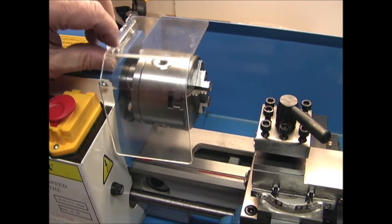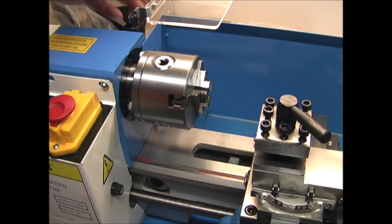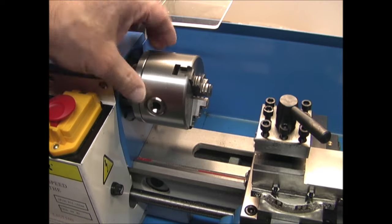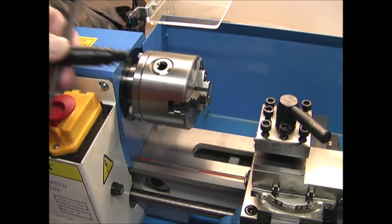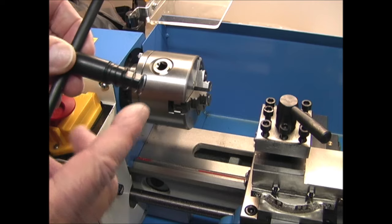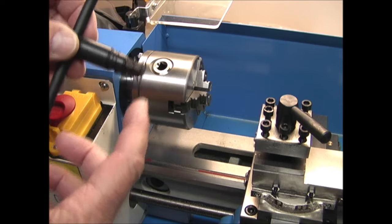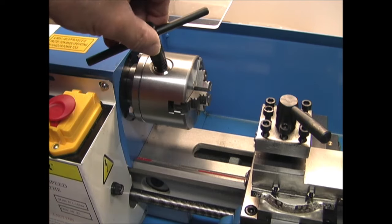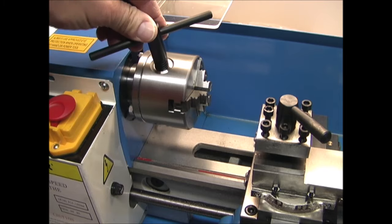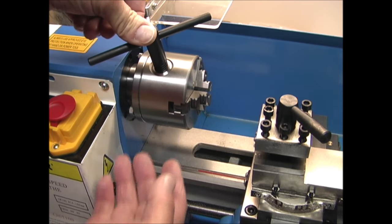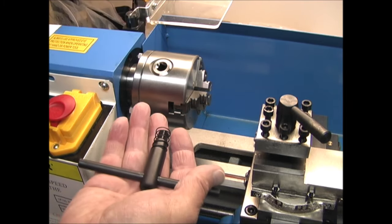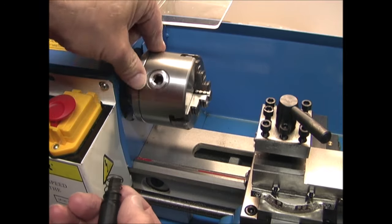There's a safety shield over the chuck and this is a three jaw chuck. The chuck key has a spring on it and this is a safety feature so if you accidentally leave it in the chuck, forget to take it out, the spring will pop the chuck key out so you don't turn it on and send it flying out.